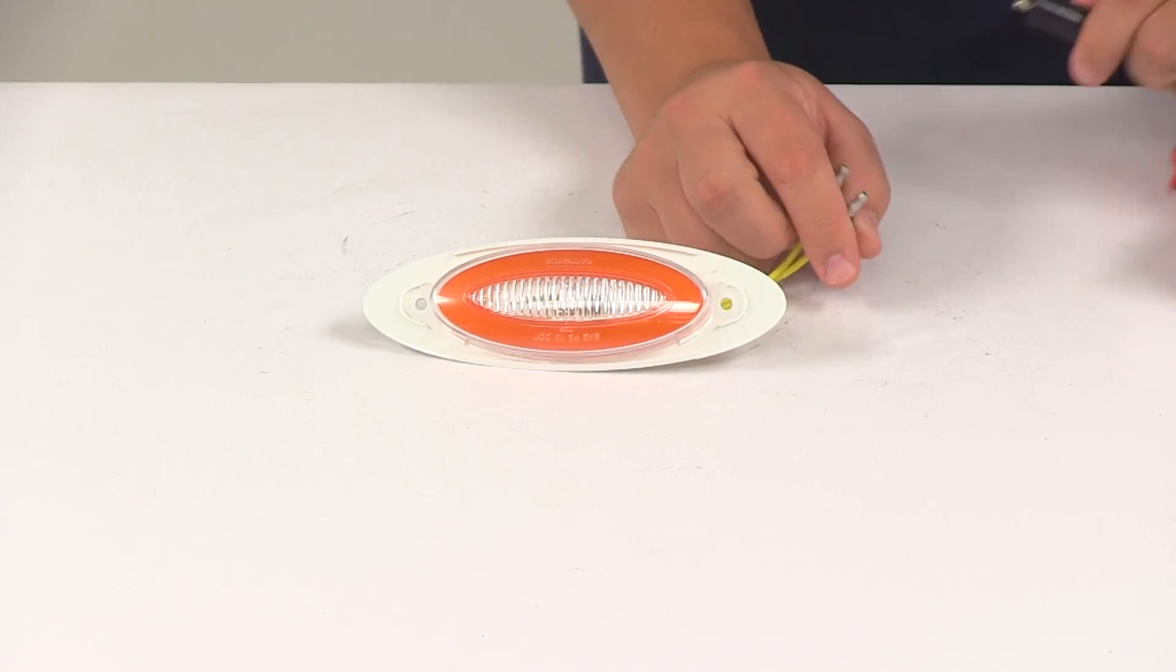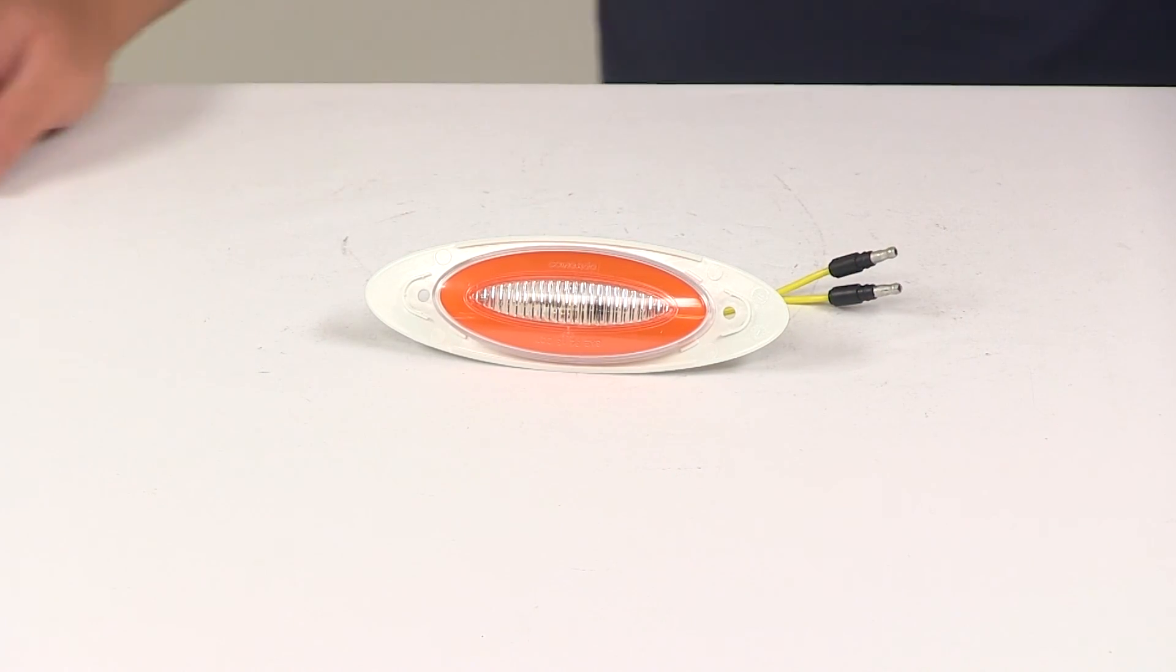That's going to do it for today's look at the Optronics Glow Light M1 LED clearance or side marker light.